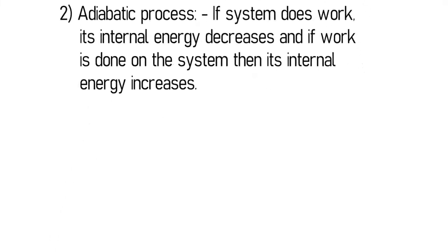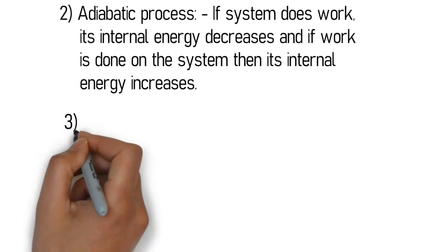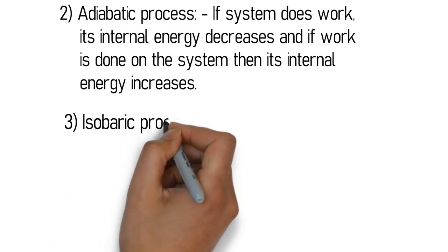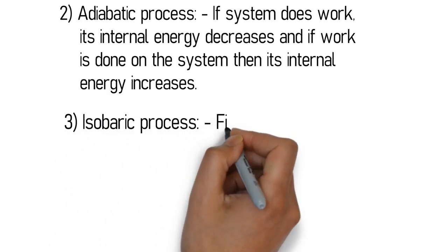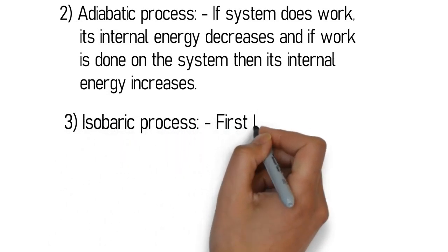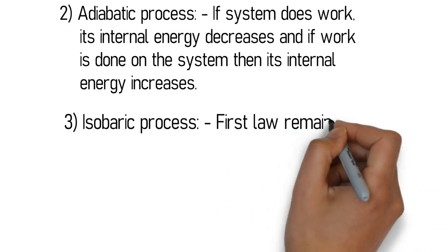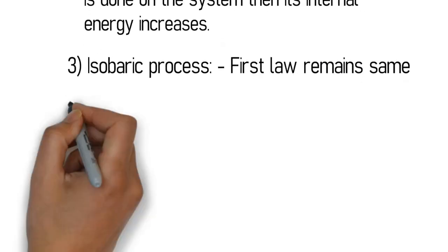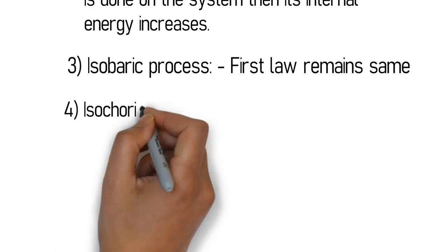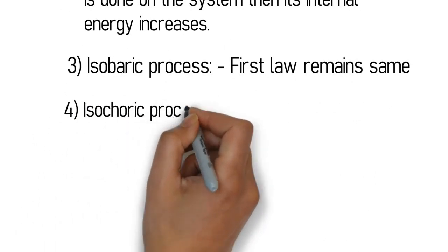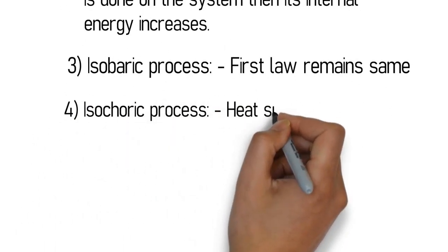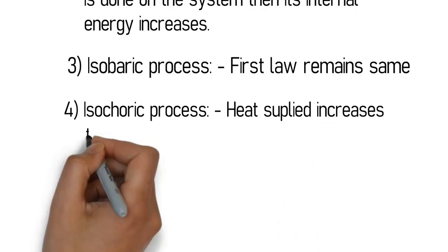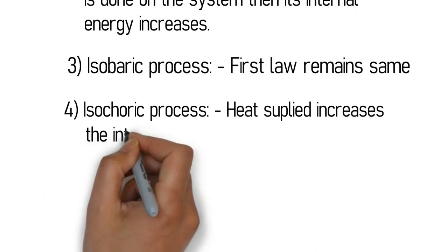Application two: adiabatic process. In an adiabatic process, Q = 0, so ΔU = −W. If the system does work, its internal energy decreases accordingly.